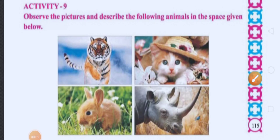Now, let us do Activity 9. Observe the pictures and describe the following animals in the space given below. Students, what do you have to do? You have to observe this picture and describe the animals in this picture — means, उसके बारे में लिखना है. So, let us see which animals are given in the picture.